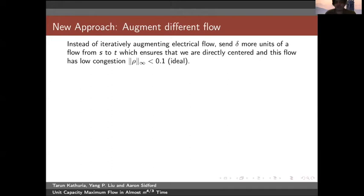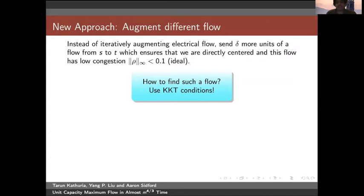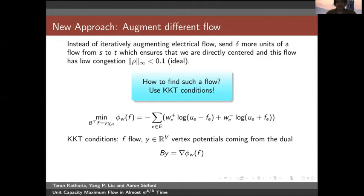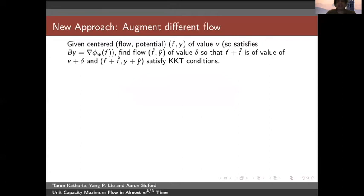The takeaway for the bottleneck is that it seems hard to do better using only electrical flows, as they don't allow for strong enough centering. So the contribution of this paper is to augment a different flow. Instead of augmenting electrical flows, we will send delta more units of a different flow from s to t, which ensures that we are directly centered and that this flow has low L-infinity norm congestion, which is ideal. To find such a flow, we will use the KKT conditions.